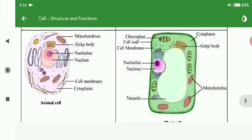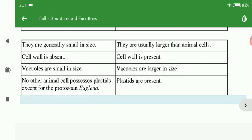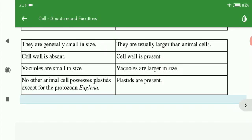So you have to write two to three differences between plant cell and animal cell, as well as draw the picture. Below you can see some differences: animal cells are generally small in size, plant cells are usually larger than animal cells, and cell wall is absent in animal cells.